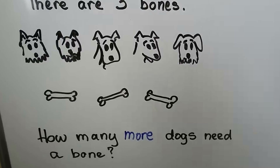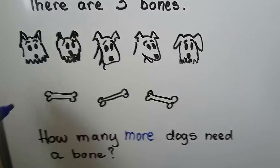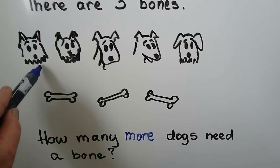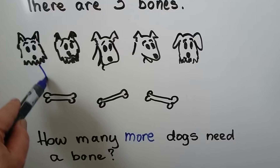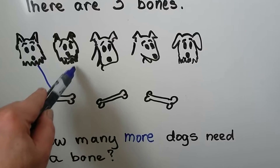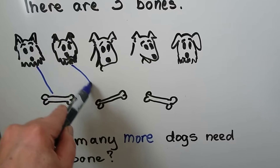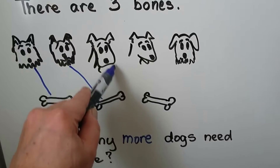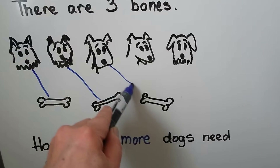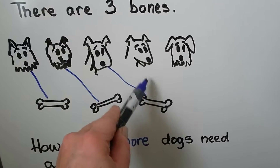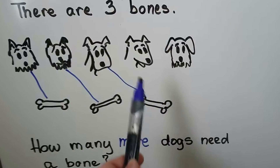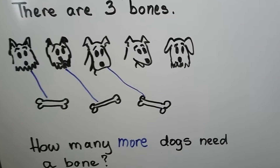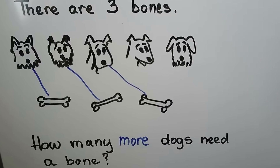We can draw a line to match them. This dog would get this bone. This dog could get this bone. This dog could get this bone. But look, we have one, two dogs too many.